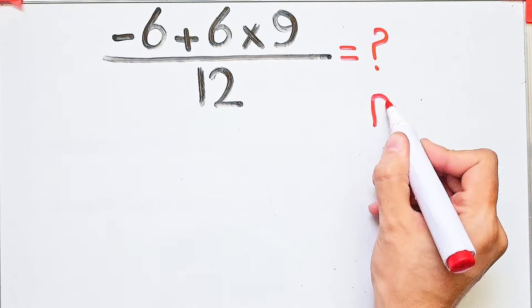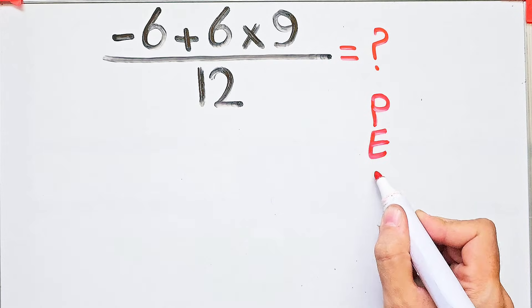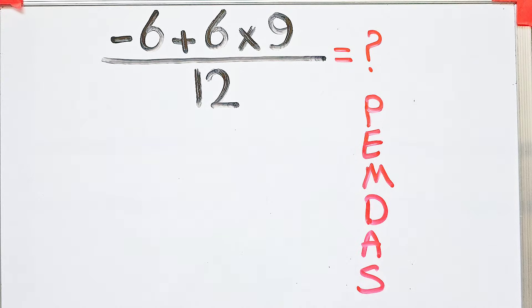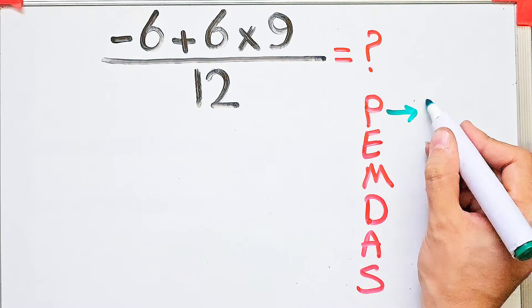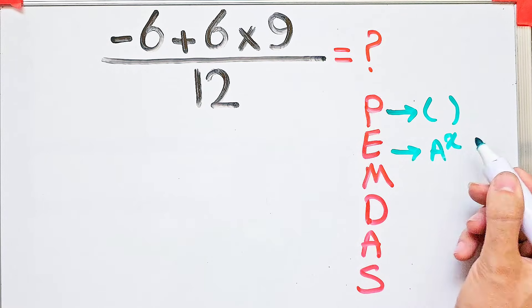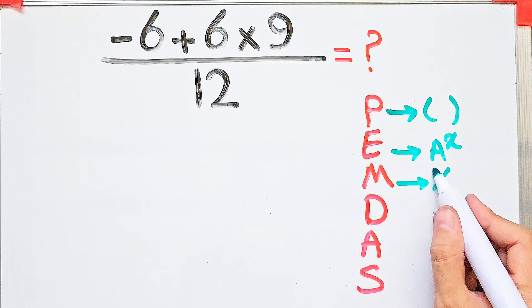To solve this question, we need to follow a rule which is PEMDAS. PEMDAS shows the priority of the mathematical operations. In this rule, P stands for parentheses, E stands for exponents, M stands for multiplication, D stands for division.